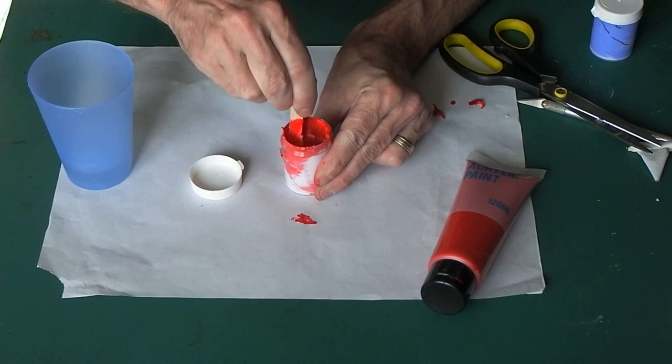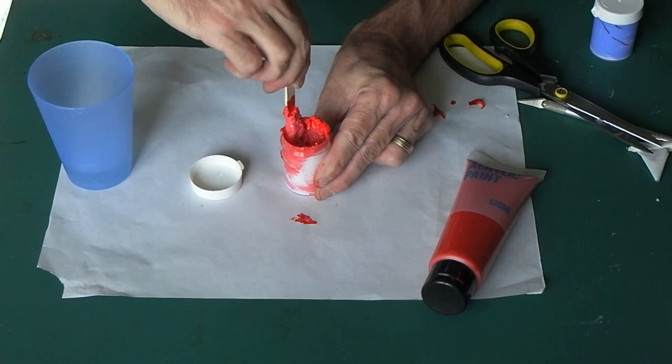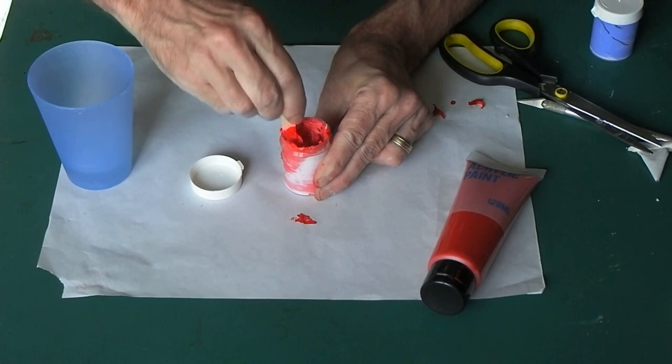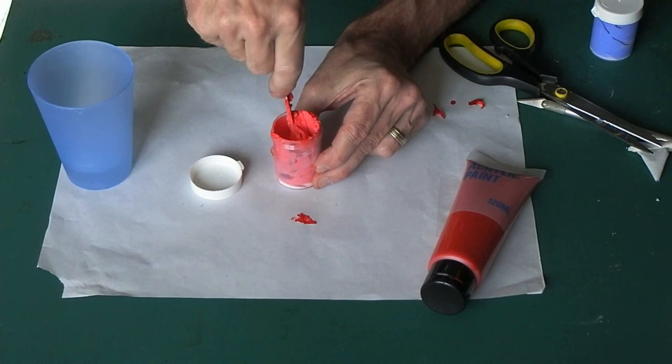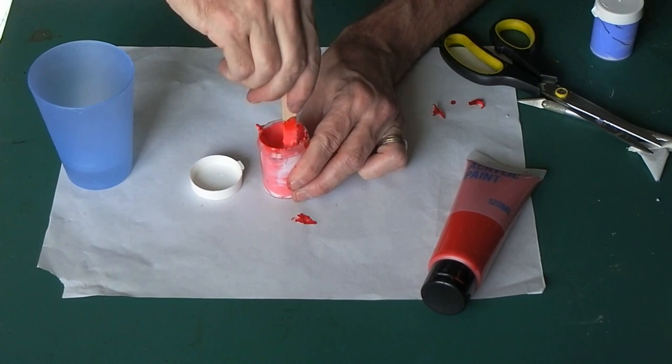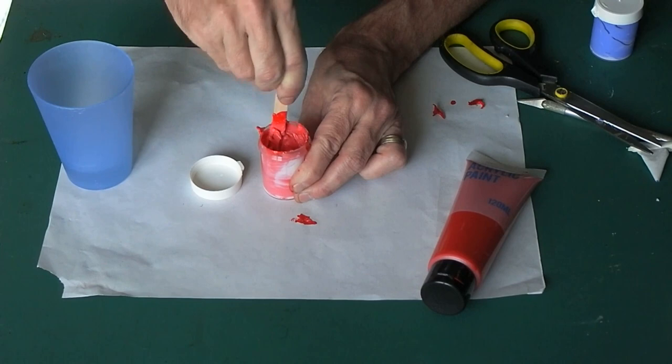Now the state we want to get it to is one where it will flow so it can be used for outlining. We want it to flow but you also want it to hold its shape. It may go a bit lumpy and it may take a little bit of stirring to get there. Maybe I should have used a bigger pot but this is what I've got so it's what I use.